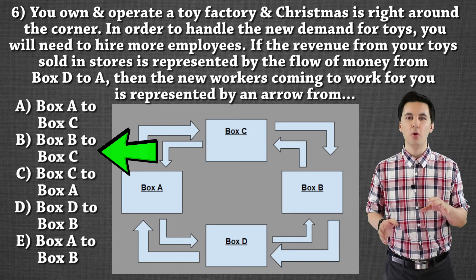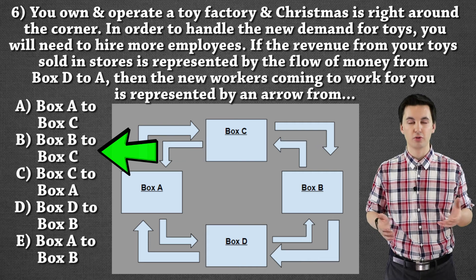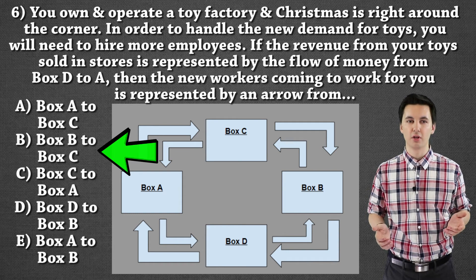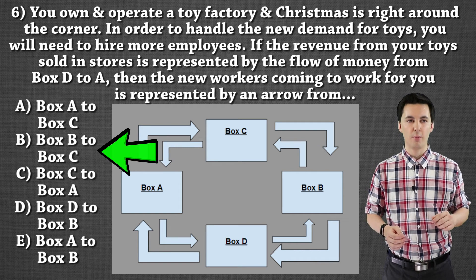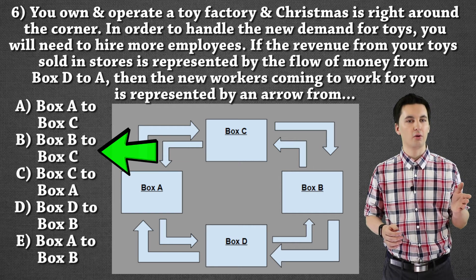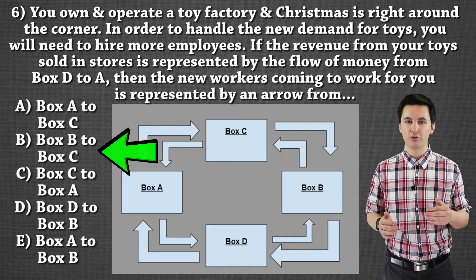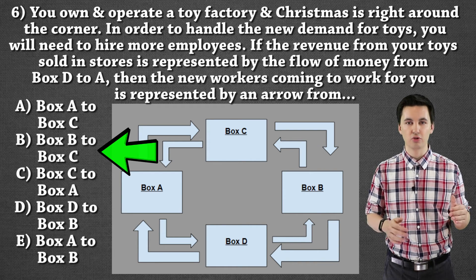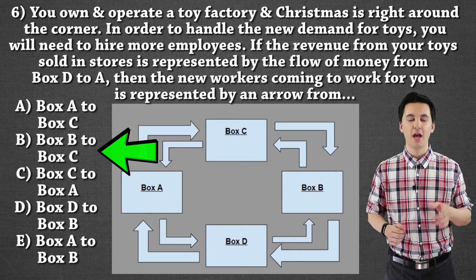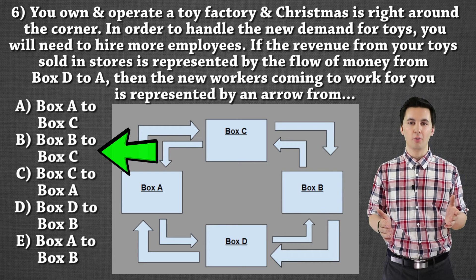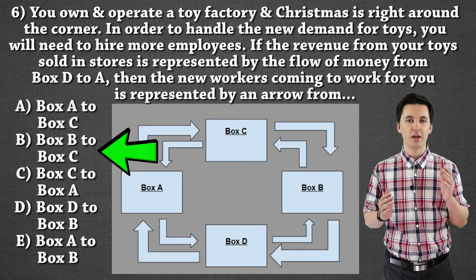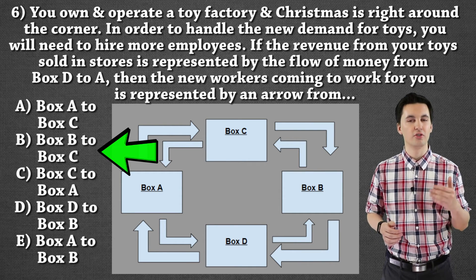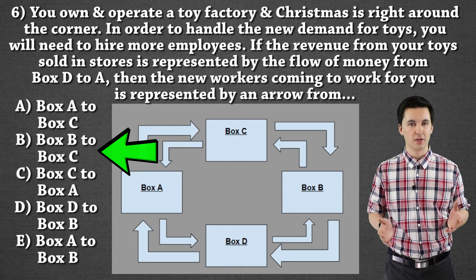Why is that? Let's go back to our question. We know we are the owner, we have a factory producing toys, and it's Christmas time so demand is up. The prompt tells us the revenue from toys sold in stores is represented by an arrow from box D to A. So I know revenue is coming from box D going to A — that makes D my product market and A the businesses. That then tells me box C is going to be my factor market and box B is going to be my households. And because I know which way the revenue is going, on the outside the arrows represent money, and on the inside going the opposite way are goods and services. So now we've identified the whole chart.